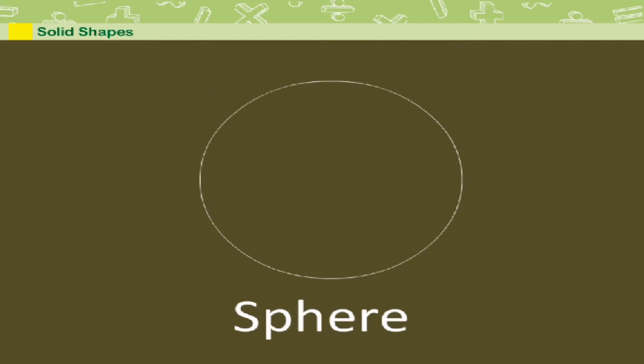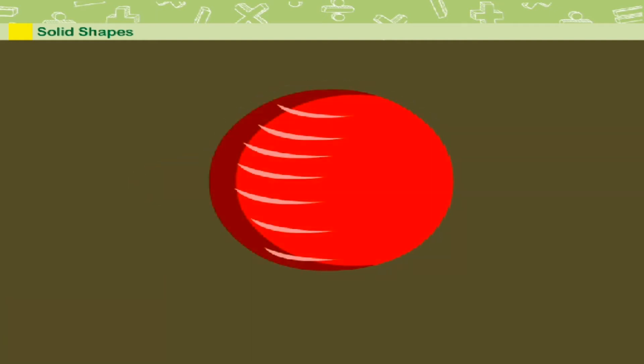A sphere is round in shape. It has one curved surface. This football is a sphere.